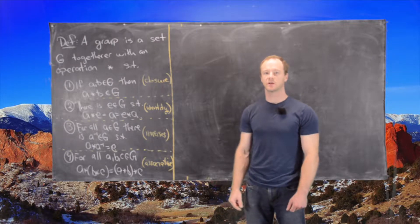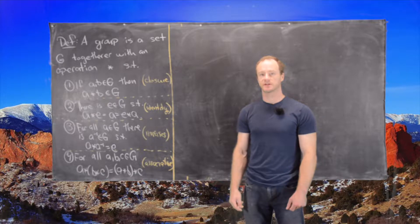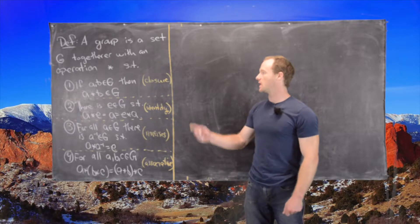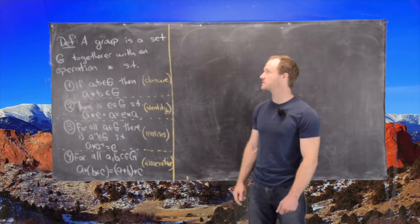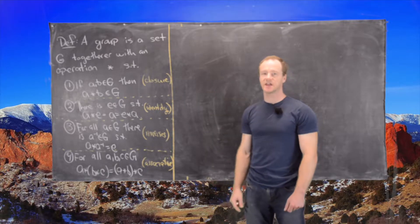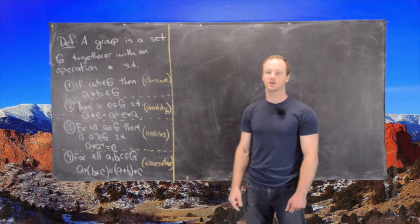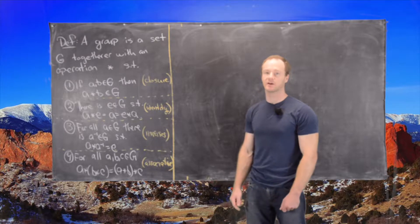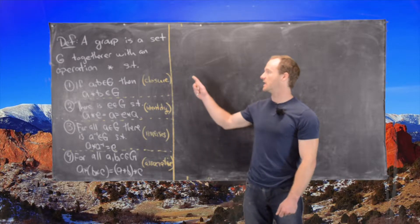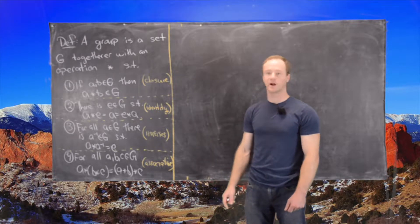Okay, in this video we're going to look at the definition of a group and some very simple examples. So let's look at the definition first. A group is a set G together with an operation which we'll call star. This is a binary operation and it satisfies these four axioms.